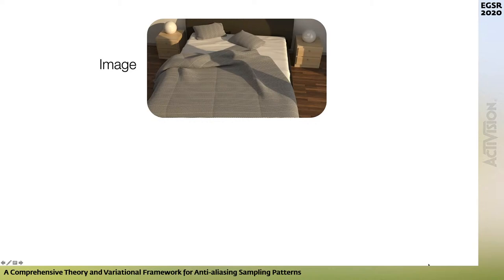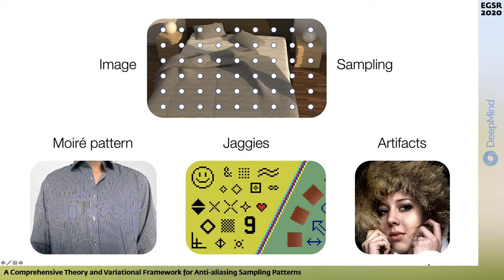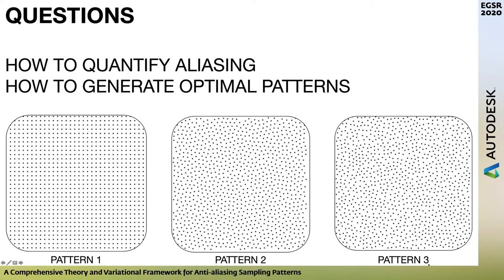I'm Cengiz from the University of Cambridge, and today I'll be talking about anti-aliasing sampling patterns — basically how to design these patterns, how to understand aliasing, and how to get rid of associated artifacts. Aliasing happens because we do sampling. If we have an image that is sufficiently sampled, and we want to represent it in a computer or render a scene, we sample many things including the image plane. This can lead to various artifacts if you're not careful, including interesting patterns, jaggies, and certain artifacts. The key questions are: how can we quantify aliasing, and how can we generate optimal patterns with respect to aliasing properties?